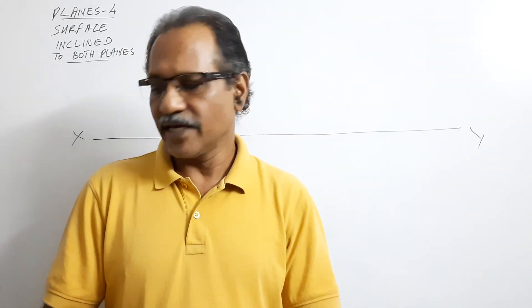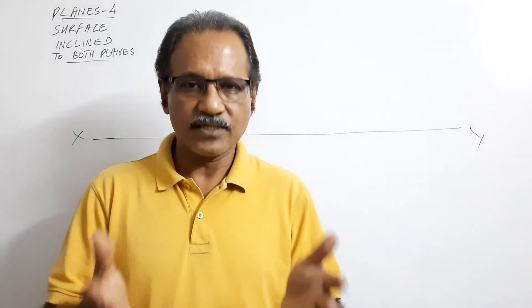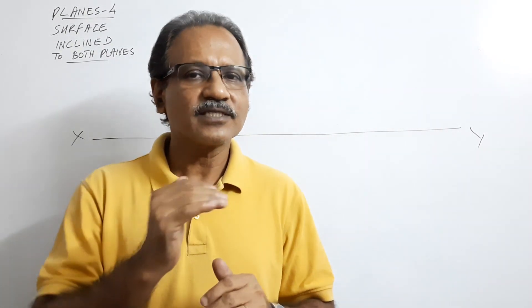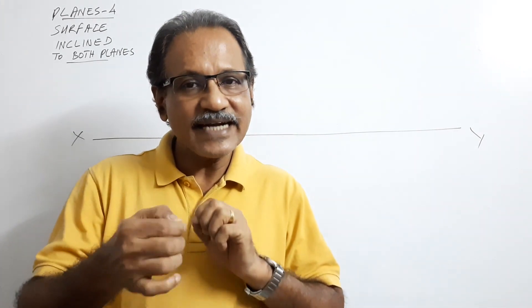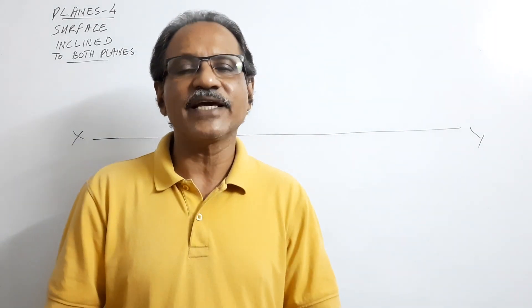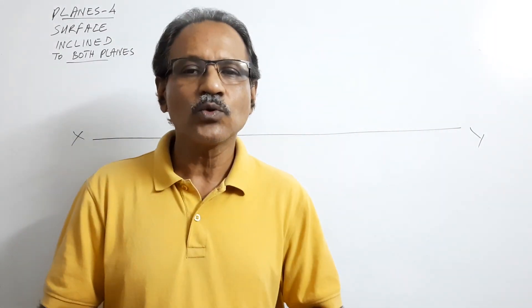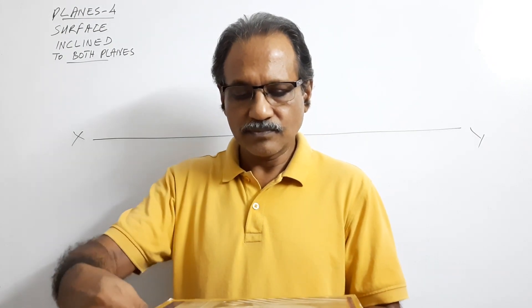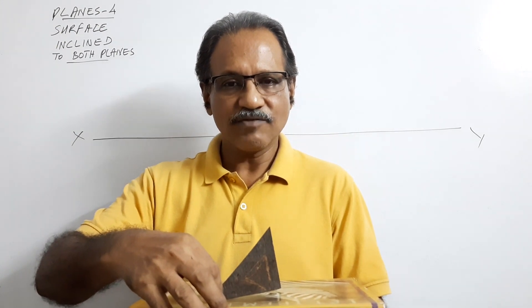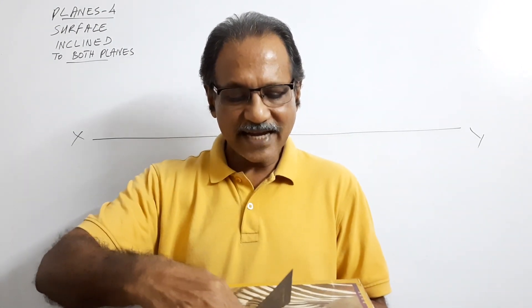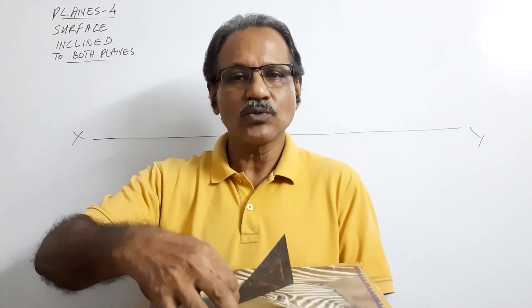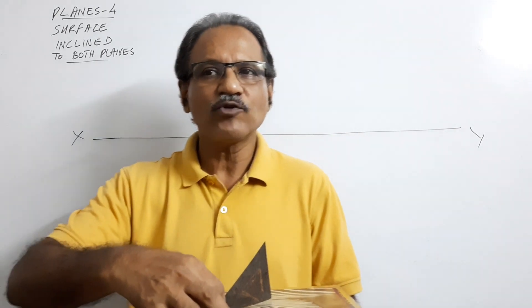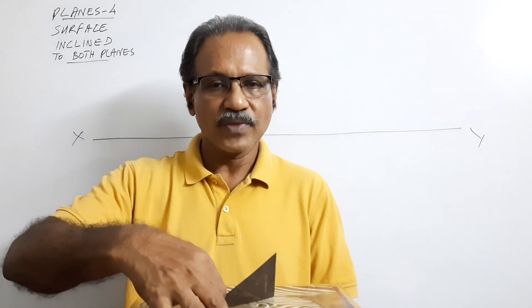The first problem in this category is a triangular lamina of 60 mm side resting on HP on one side. The surface makes some angle to HP, say 40 degrees, and the edge on which it is resting makes some inclination to VP. The lamina is resting on one side; that side makes some inclination to VP, and the surface makes some inclination to HP. Reading the question, we have to understand what is the position of the object.